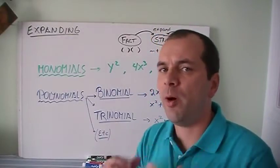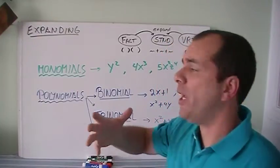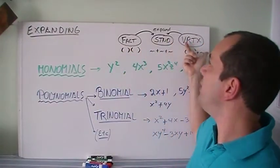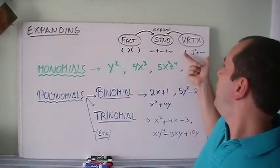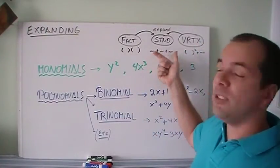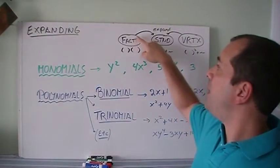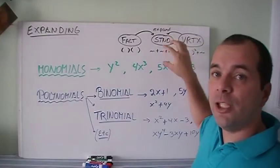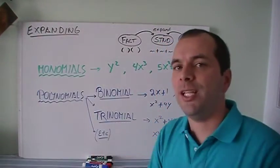Alright, so today's lesson is going to be about expanding. Why do we need to expand? If you remember our forms, we have three forms: factored, standard, and vertex. Factored is two brackets multiplying each other. Vertex has a bracket squared plus something, and standard is just pluses or minuses with different terms. We expand factored and vertex in order to go into standard form.